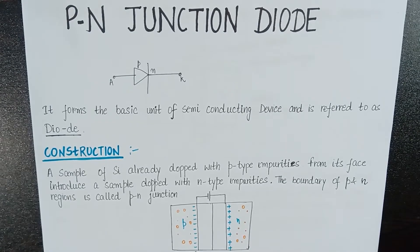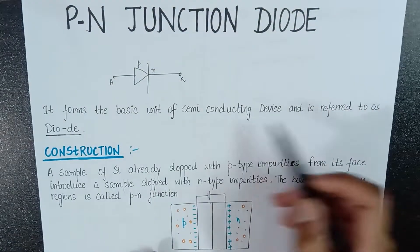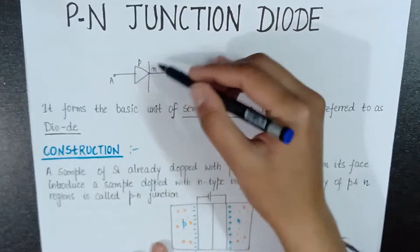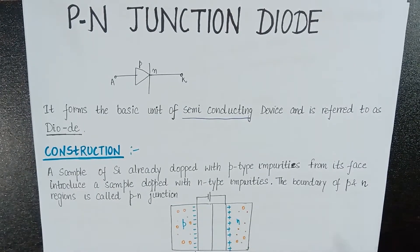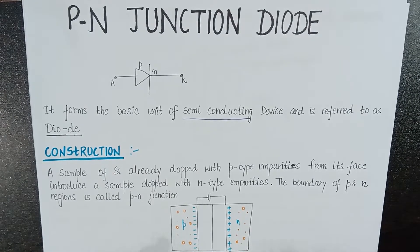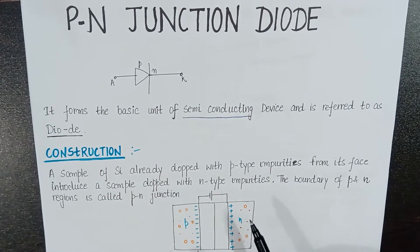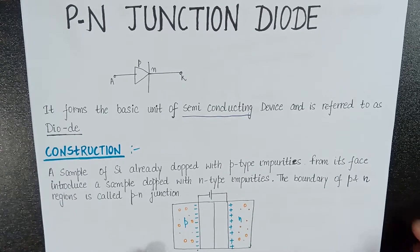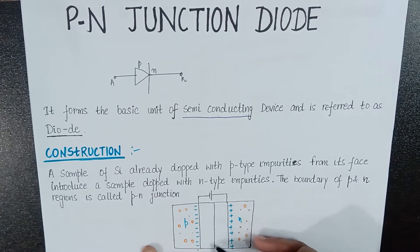Hello learners, today we'll discuss the PN junction diode. It forms the basic unit of a semiconducting device, and it is called a diode because it has two terminals: a positive terminal and a negative terminal. To construct a PN junction diode, we take a silicon sample doped with P-type impurities, and from its face we introduce a region doped with N-type impurities. The boundary between the P and N regions is called the PN junction.